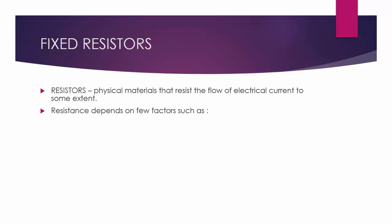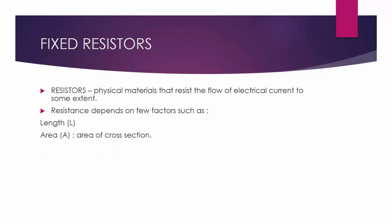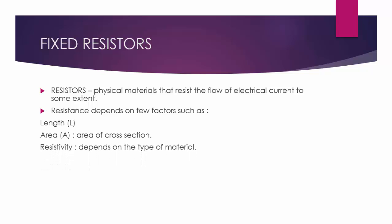Resistance depends on many factors. The crucial factors that affect resistance are: length, denoted by L; area of cross-section, denoted by A; and resistivity, which depends on the type of material. A relation can be established between them: R = ρL/A.